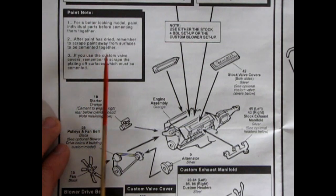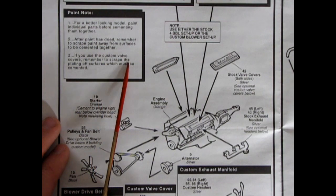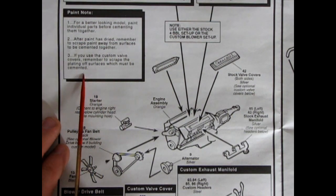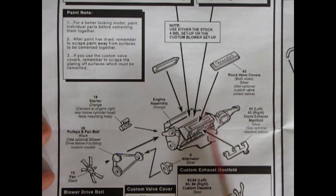You don't need all that stuff. You can just use testers, but scrape the paint and go plastic to plastic. Anyway, I'm not knocking the other glues. I'm just saying. If you use the custom valve covers, remember to scrape the plating off surfaces which must be cemented. Okay, so always something important. All right, so there's our engine glued together from step one.